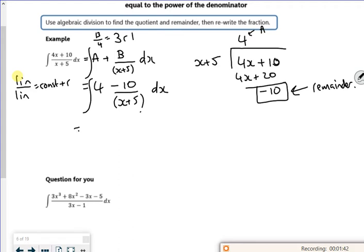So now if I integrate it, the 4 becomes a 4x. The second bit becomes a log. So what I've got is minus 10. What I want is 1, so I've got like an invisible divide by 1. And then it's log of whatever's on the bottom. And then that's done.